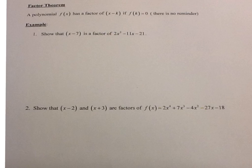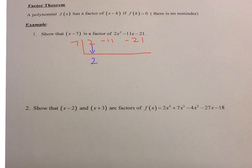Let's look at this polynomial. Show that x minus 7 is a factor of 2x squared minus 11x minus 21. I'm going to use synthetic division. So it's 7 on the outside, set it up: 2, negative 11, negative 21. Bring down the 2. 7 times 2 is 14. Negative 11 plus 14 is 3. 7 times 3 is 21. Negative 21 plus 21 equals 0. So my remainder is 0.